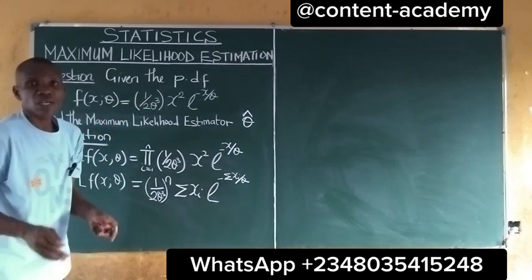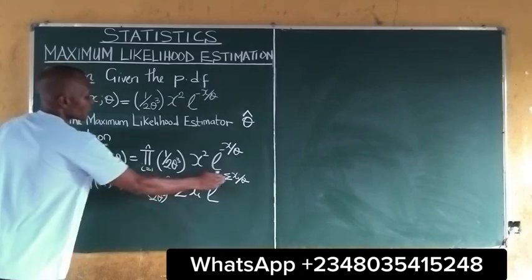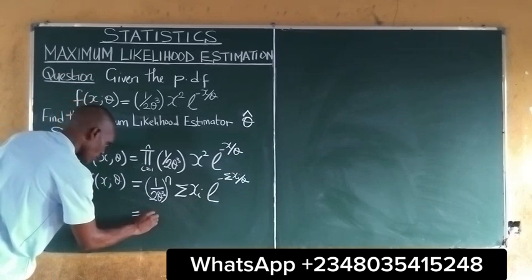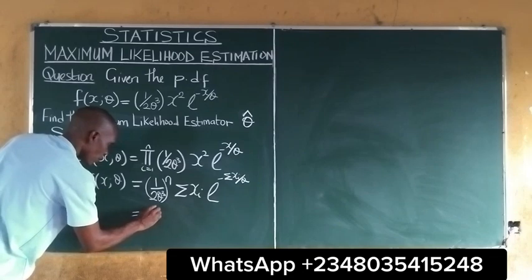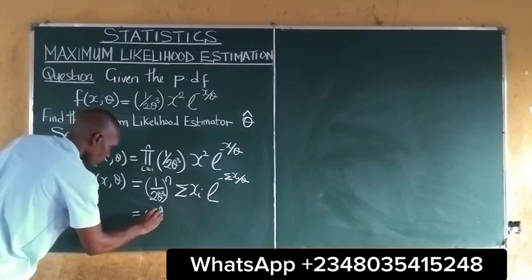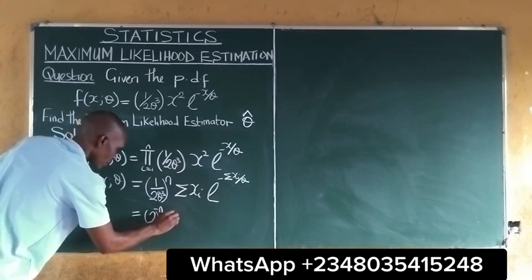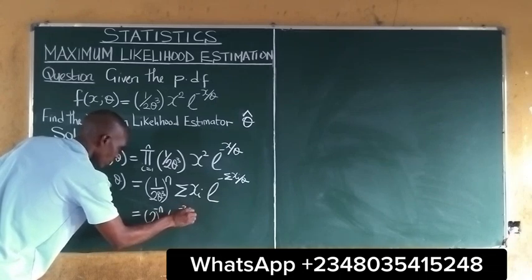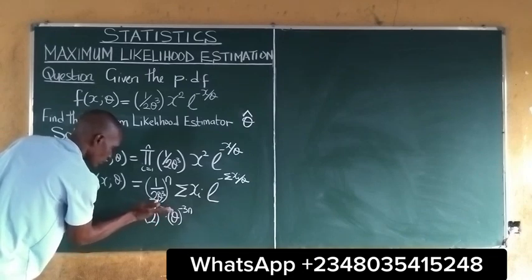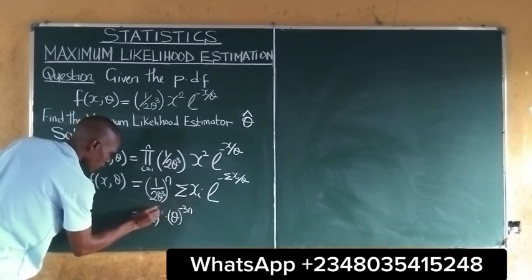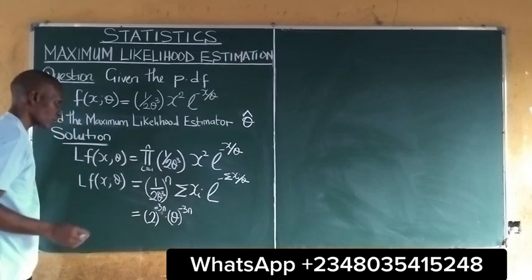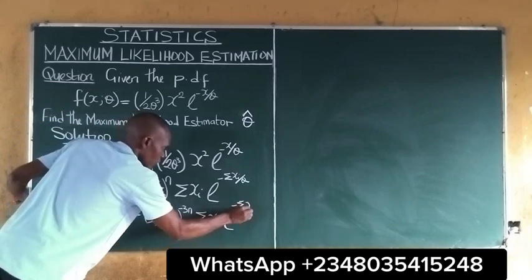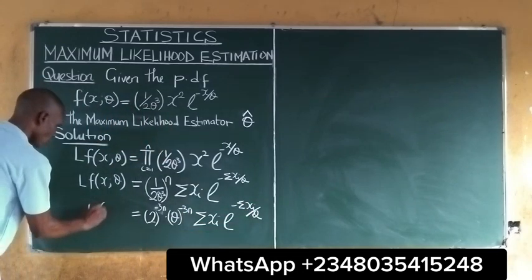The next thing to do is to take the log. To take the log, we need to rearrange all of this so that it will be easier. Rearranging, we have 2 raised to the power of negative n, times theta raised to the power of negative 3n, times summation of xi's, times exponential of summation of xi all over theta. Nothing has changed.